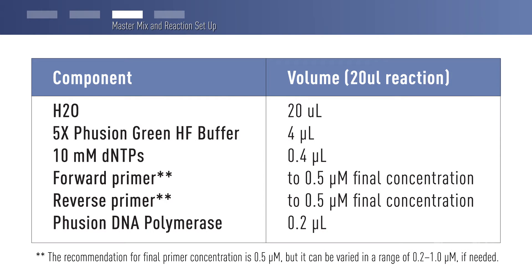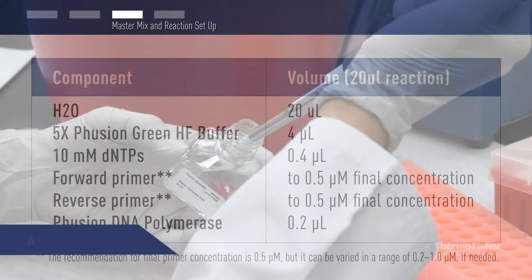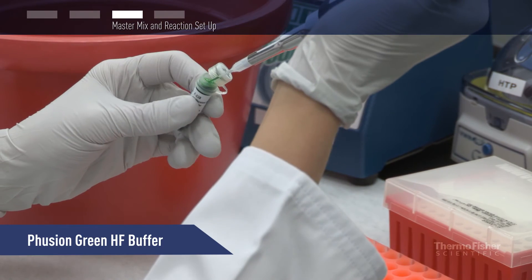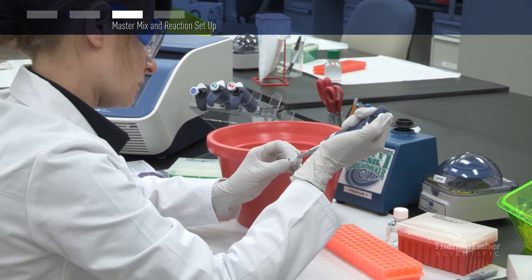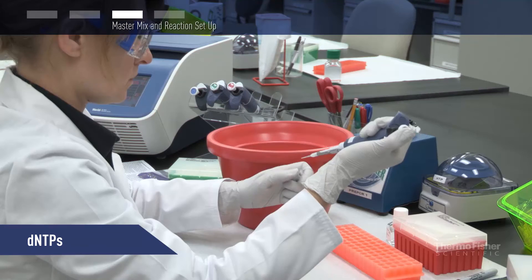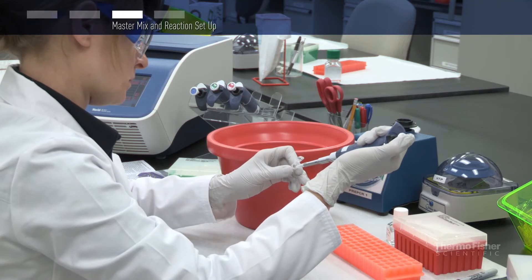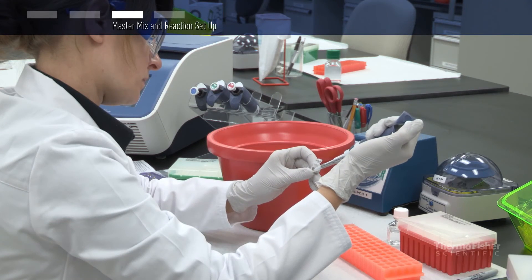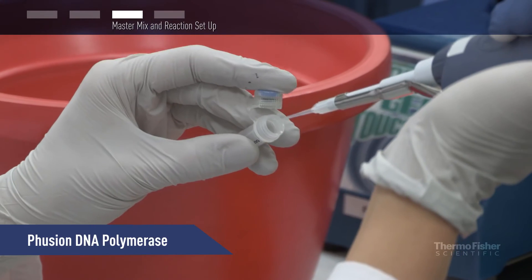Here are the reagents and volumes needed to prepare one 20 microliter Thermo Scientific Fusion Green PCR reaction. Add the water, Fusion Green buffer, dNTPs, primers, and Fusion DNA polymerase in that order.